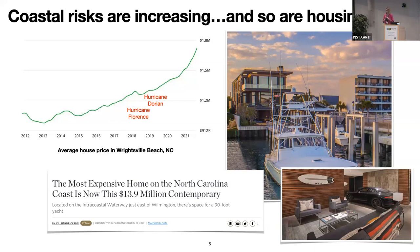We know that coastal risks are increasing due to sea level rise, storms, and shoreline erosion — but so are housing prices. This plot shows the last 10 years of housing prices in Wrightsville Beach, North Carolina. We had two really large, devastating hurricanes during this period — Hurricane Florence and Hurricane Dorian. They made little bumps in these trends, but prices are still going up. Just last year, the most expensive home in the state listed for $13.9 million in Wrightsville Beach along the Intracoastal Waterway, and that's in an area that previously flooded.